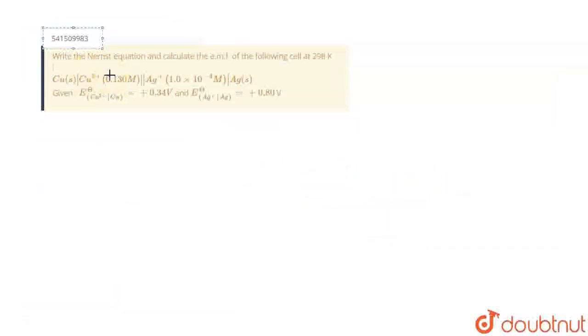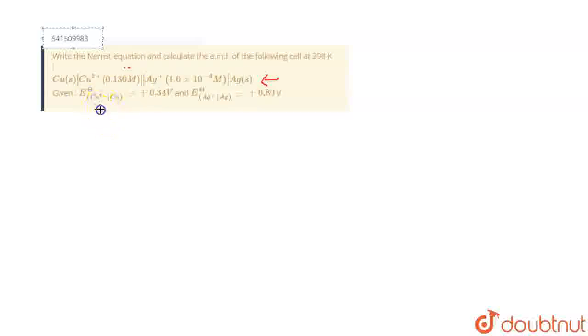Hello to everyone. The question says: write the Nernst equation and calculate the EMF of the following cell at 298 Kelvin. You are given with the reduction potential of copper as 0.34 volt and reduction potential of silver as 0.80 volt.